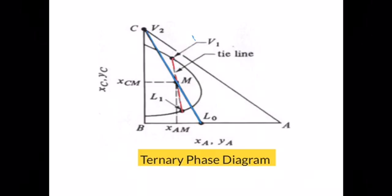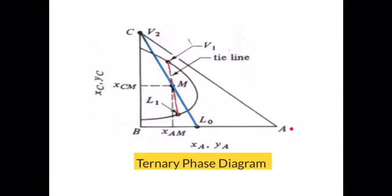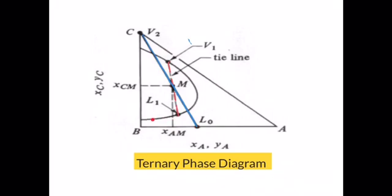In this ternary phase diagram, you're going to label the locations for the feed, solvent, extract, and raffinate. The x-axis represents the mass fraction of the solute, and the y-axis represents the mass fraction of the solvent. The location of L0 (the feed) is not on the equilibrium curve.